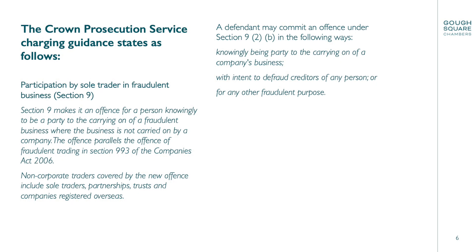When to consider charging? The Crown Prosecution Service charging guidance says as follows: a participation by a sole trader in fraudulent business — Section 9 of the Fraud Act, the fabulous Fraud Act — Section 9 makes it an offence for a person knowingly to be a party to the carrying on of a fraudulent business where the business is not carried on by a company. The offence parallels the offence of fraudulent trading in Section 993 of the Companies Act. That's really important for practitioners considering what charges should be levied. Bear in mind, if there are companies involved, then often it is Section 993 of the Companies Act that would apply. But if they're a sole trader or there's no corporate entity, then the Fraud Act would have greater application.